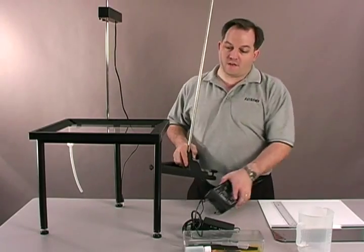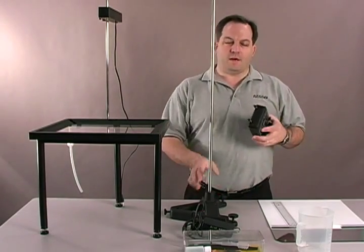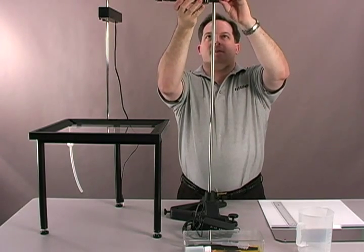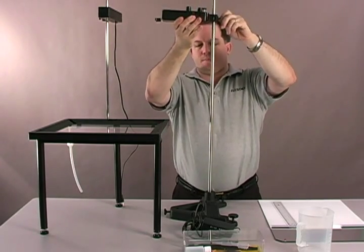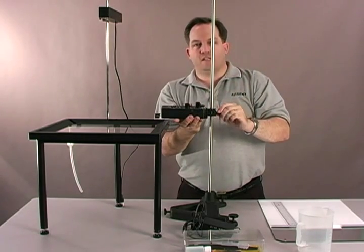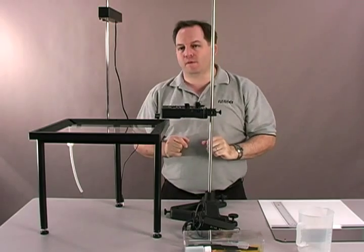Now this rod stand's a little bit overkill for what we're doing today, but it does get the point across. I'm going to mount the rippler separately. Now you generally want to mount the rippler separately anyway because you don't want it interfering with the tank. As you can see, it's very easy to place, and we could actually use a much smaller rod stand.